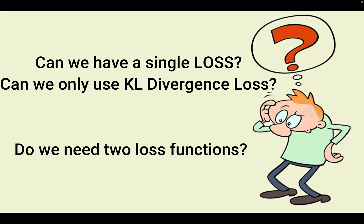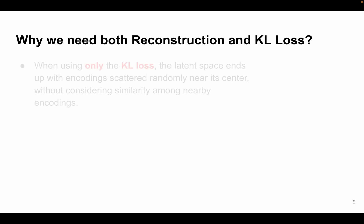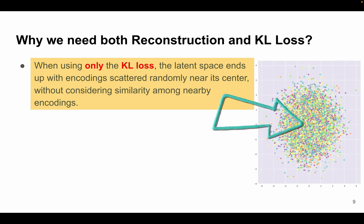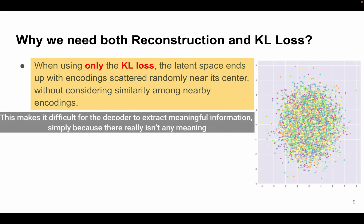Now I have this one doubt in mind: can we have just this KL divergence loss and not reconstruction loss? Let's see why we need to have both reconstruction and KL divergence loss. Now when we use only this KL divergence loss, the latent space might end up with encodings which are scattered randomly near its center, without even considering the similarity among nearby encodings. This makes it difficult for the decoder to extract meaningful information, simply because there really isn't any meaning in this particular cluster.